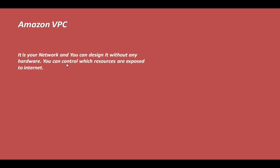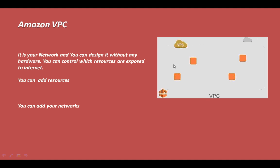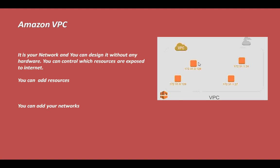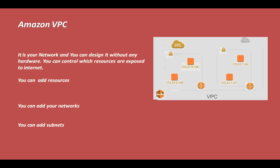You will be able to control which resources need internet access and which do not. You can add different resources such as database servers or storage devices within the VPC, assign them to parts of the network, and create different subnets. For example, you can create different subnets for development and different subnets for the staging server — all this isolation is achievable within a VPC.